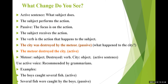What change do you see? In an active sentence, the subject performs the action. In passive, the focus is on the action, and the subject is on the receiving end — the verb is the action that happens to the subject. For example: active sentence — the meteor destroyed the city. Meteor is the subject, destroyed is the verb, city is the object. In passive: the city was destroyed by the meteor. So destruction ka jo action hai, woh subject receive kar raha hai — passive sentence.